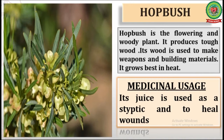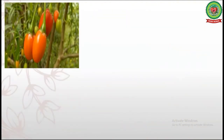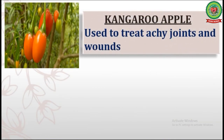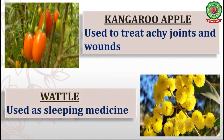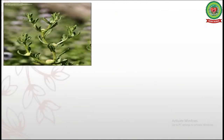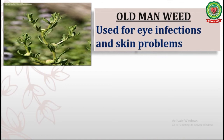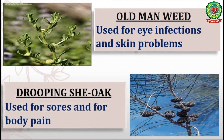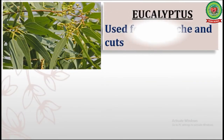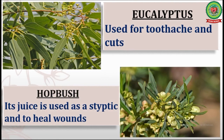Now let's recall the medicinal usage of plants found in Australia. Number one, Kangaroo Apple — used to treat achy joints and wounds. Number two, Vettel — used as sleeping medicine. Number three, Old Man Weed — used for eye infections and skin problems. Number four, Drooping She-Oak — used for sores and body pain. Number five, Eucalyptus — used for toothache and cuts. Number six, Hobbush — its juice is used as a styptic and to heal wounds.